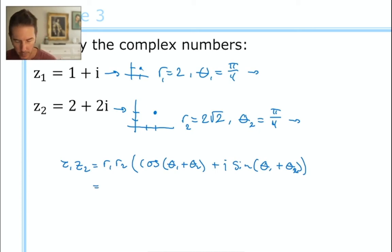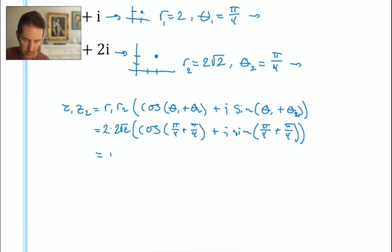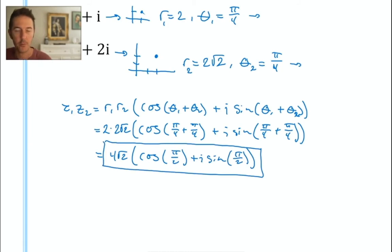And let's fill in some blanks. So we have an r1 value of root 2 and the r2 value was 2 root 2. Cosine of pi over 4 plus pi over 4 plus i times the sine of pi over 4 plus pi over 4. Now let's get to writing a final answer in polar form. The coefficient is 4 times the square root of 2. Cosine of pi over 2, cosine of pi over 4 plus pi over 4 is equal to pi over 2, plus i times the sine of pi over 2.